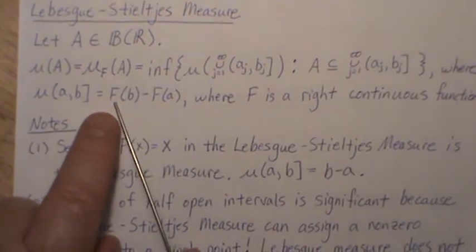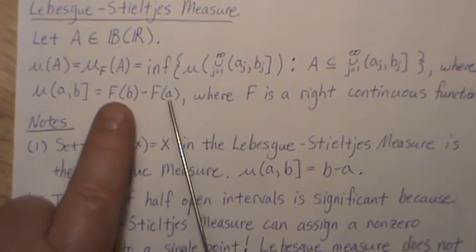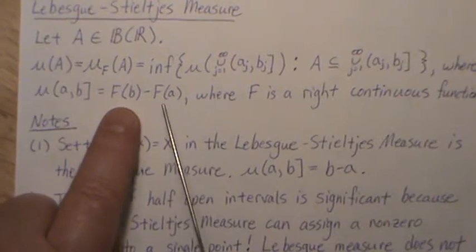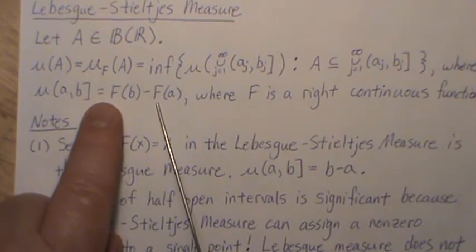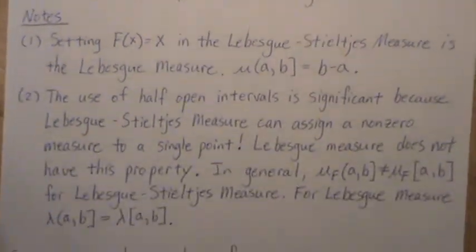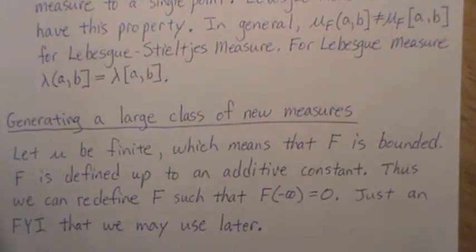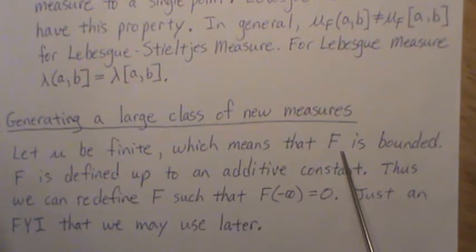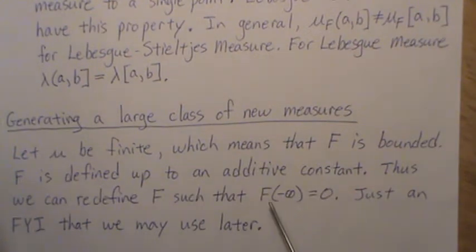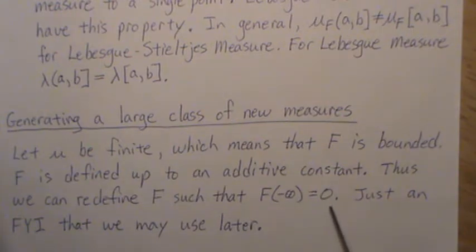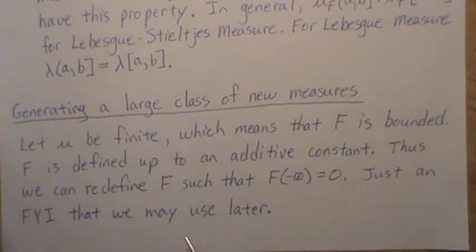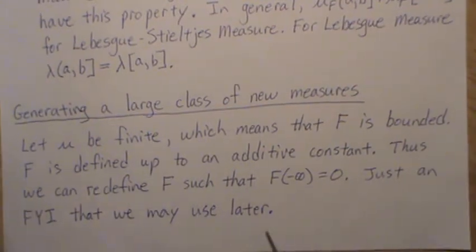When we look at the Lebesgue-Stieltjes measure, if we add a constant to the function F, that constant cancels out when we take this difference. So the distribution function is only defined up to an additive constant. If F(-∞) equals some value C, we could subtract C from F, redefining F such that F(-∞) = 0. This is just an FYI that we may use later.